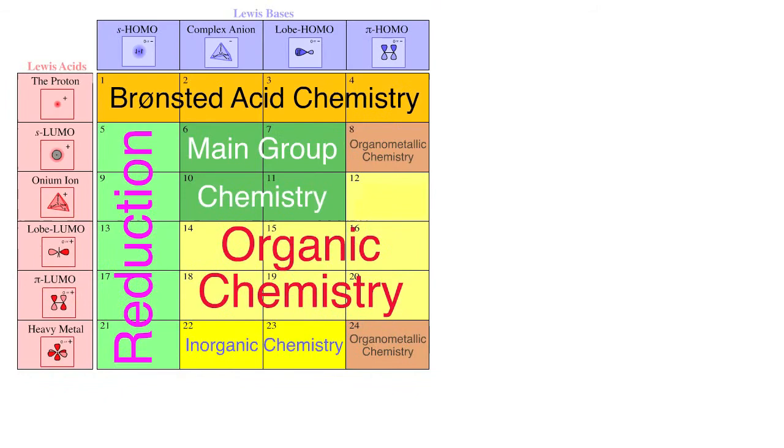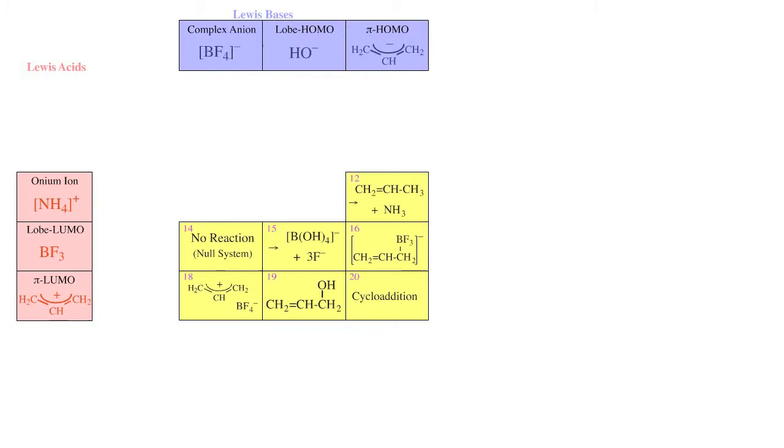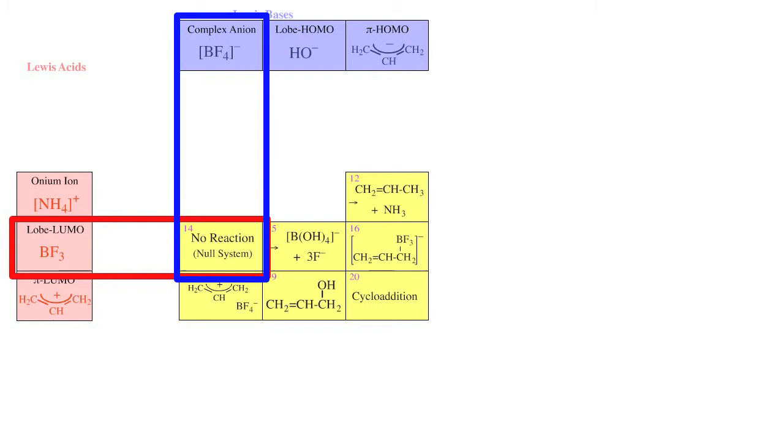A vast amount of organic chemistry can be described in terms of the Lewis acid-base interaction complex. First, we have complex anions with lobe LUMO Lewis acids. Even though the BF3-BF4- is a null system, there are many examples of this type.